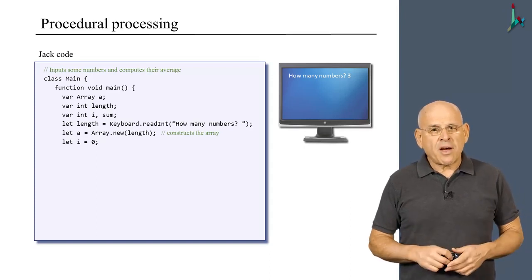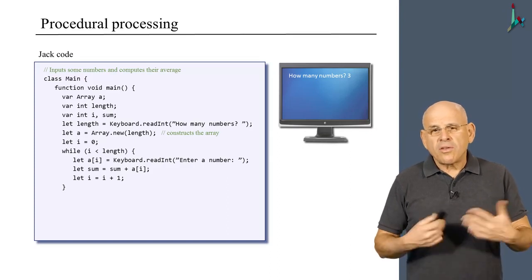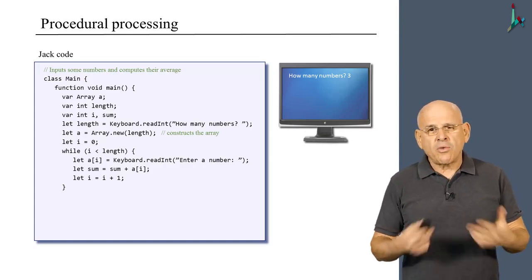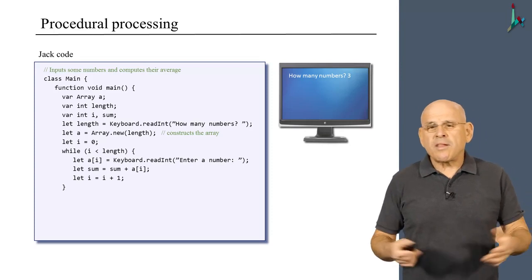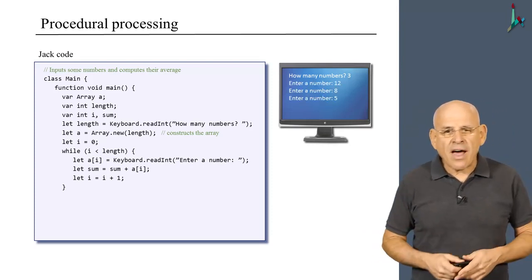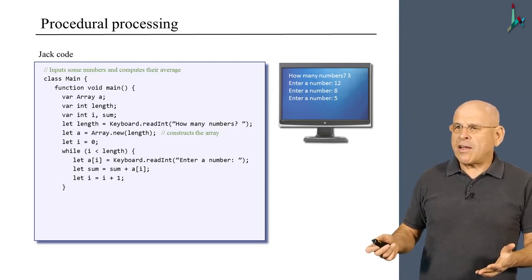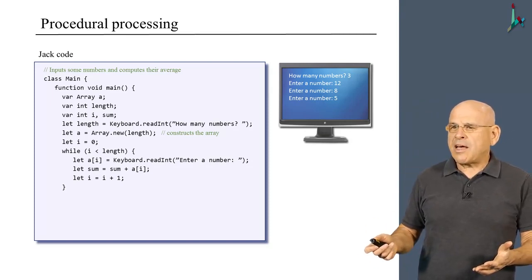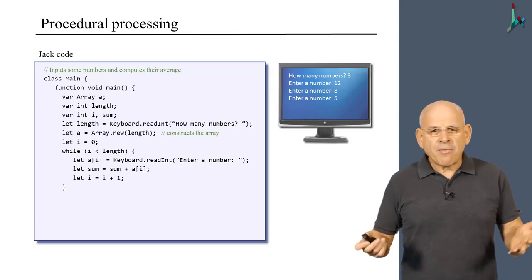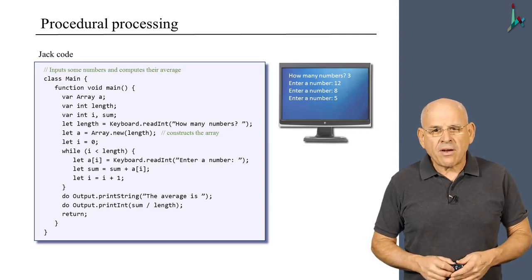We set some variable to zero, and then we enter a loop in which we continue to prompt the user to enter numbers. Let us assume that the user entered the numbers 12, 8, and 5. And let's see, the average of 25 is 8 point something. And indeed, when we print the average, we get the result 8,